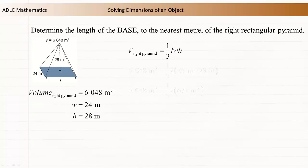Substitution of the given values makes the formula 6048 meters cubed equals one-third times the length times 24 meters times 28 meters.